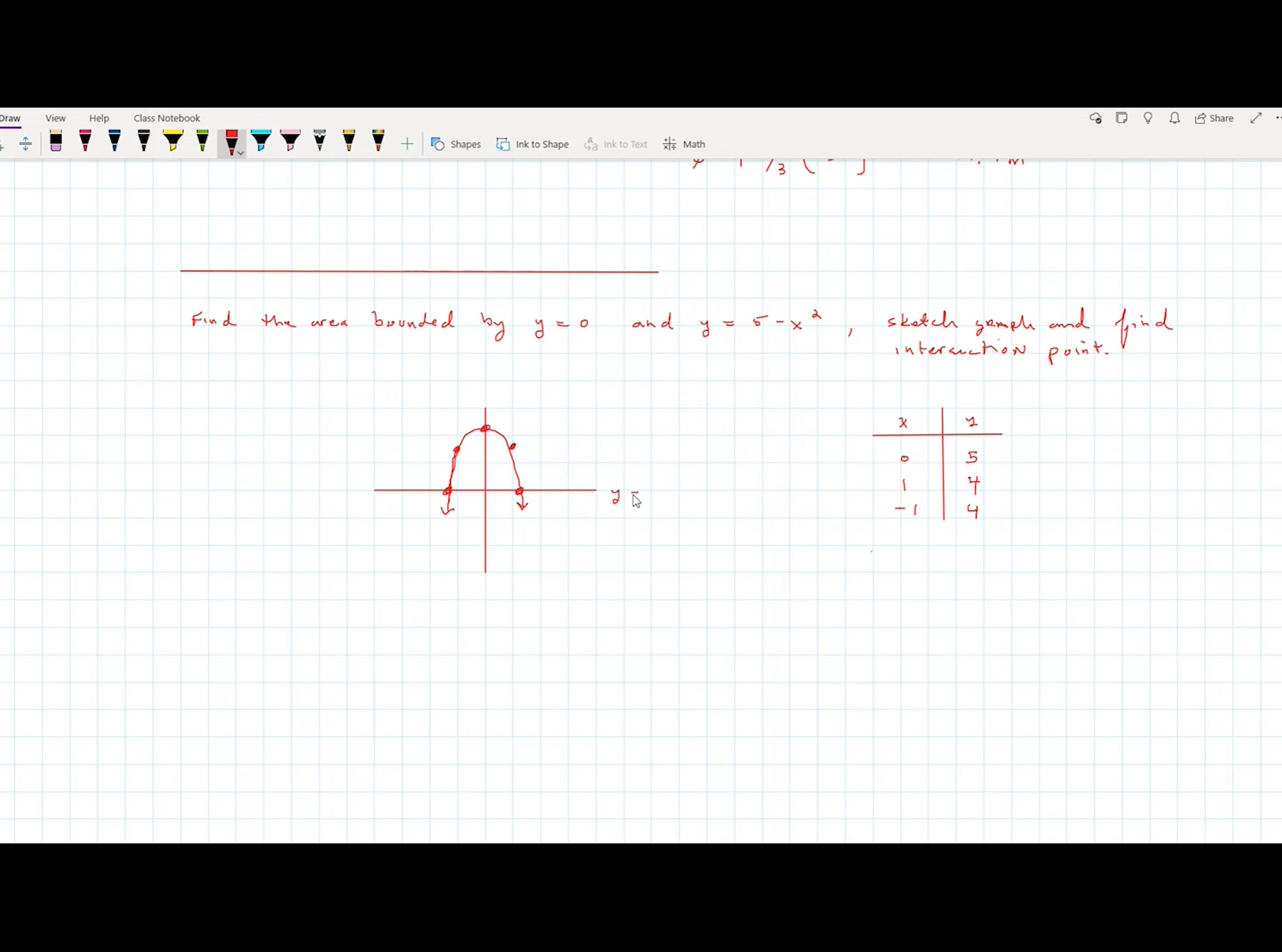The x-axis is y equals 0. So there you go, this is negative square root 5. And this is square root 5.